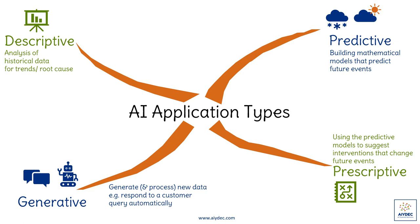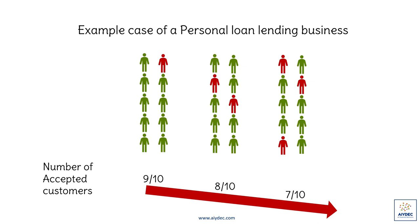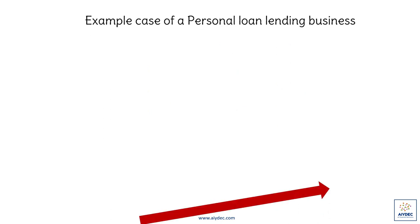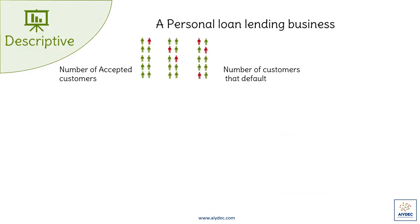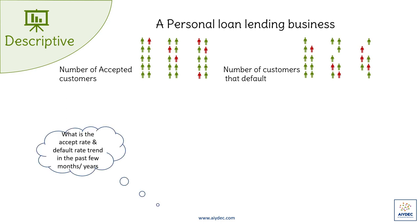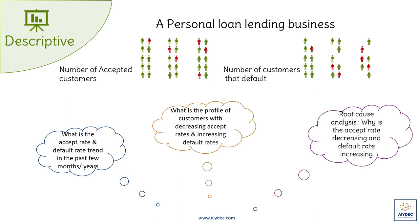Let's build up on our understanding of application types with a use case of a lending business issuing personal loans. For some unknown reason, this business sees a decline in the number of new customers being accepted for the loan product, which obviously means a declining revenue line. Also alarming is that the bad rate of the accepted customers is increasing, which usually means a declining bottom line as well. In the descriptive analysis section of AI, the business can analyze things like trends on accept or default rates for various time periods. Specific analysis on which segment of customers are most affected and why would also be helpful. Descriptive analysis is usually very unbounded, so multiple types of analysis are possible. However, it's very important to keep them targeted and unbiased.